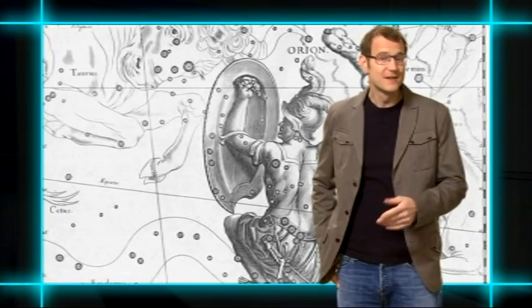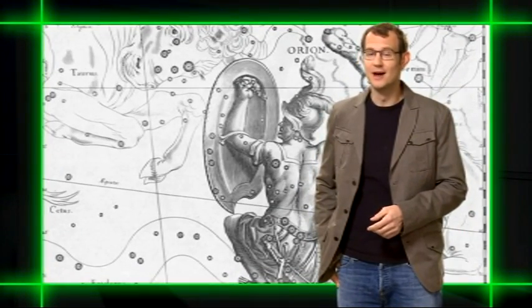In the sword, just under the belt in the constellation of Orion the Hunter, is the majestic Orion Nebula. The Orion Nebula is one of the best-known examples of a star-forming nebula, a swirling cloud of gas and dust where stars begin their journey of life.